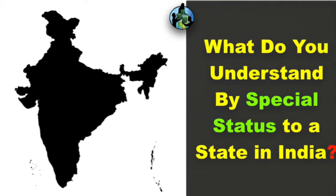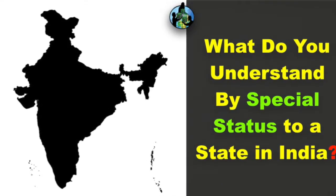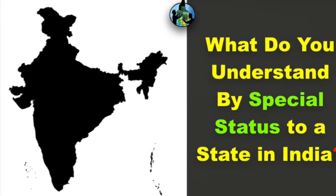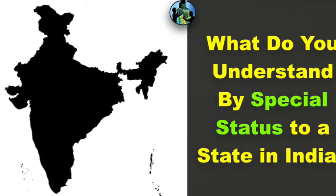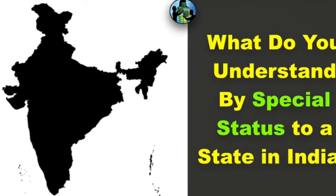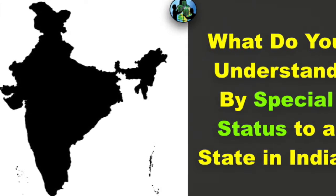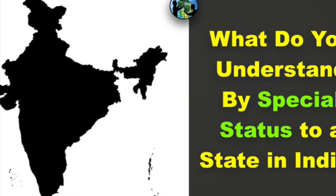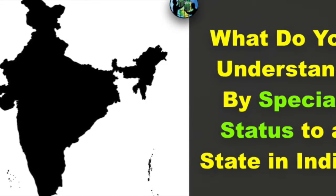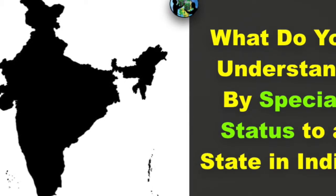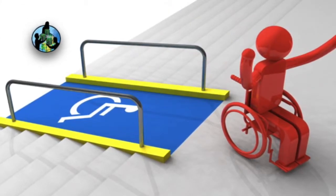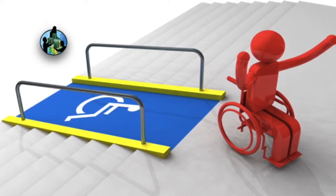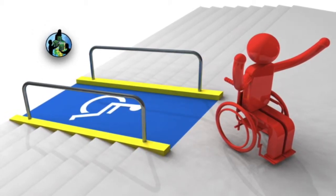Hello everyone. What do you understand by a special status to a state in India? The meaning of a special status to a state in India is giving a special treatment to the state that has been given this status. The special status is given in terms of centrally sponsored financial assistance and other tax benefits.